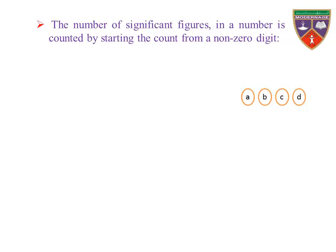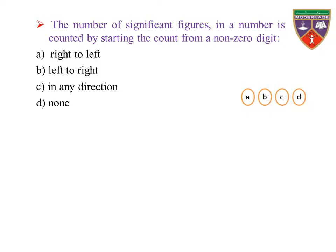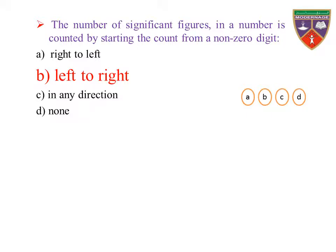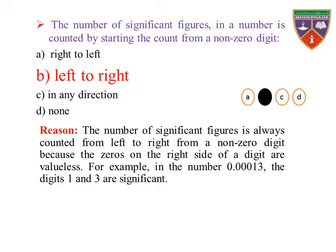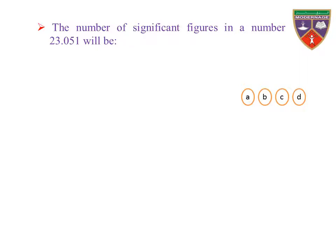The number of significant figures in a number is counted by starting the count from a non-zero digit — option A: right to left, B: left to right, C: in any direction, D: none. The key is left to right, therefore the correct option is B. Reason: the number of significant figures is always counted from left to right from a non-zero digit because the zeros on the right side of a digit are valueless. For example, in the number 0.00013, the digits 1 and 3 are significant, so the number of significant figures is 2.